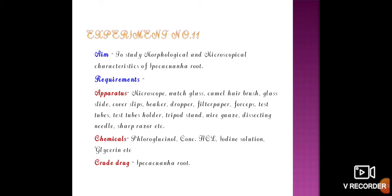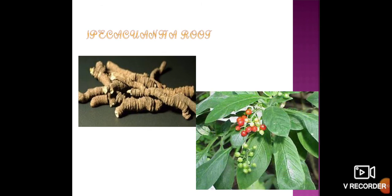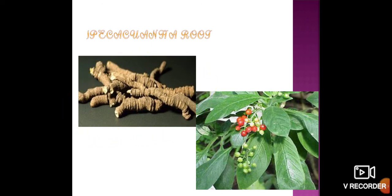The chemicals required are fluoroglycinol, concentrated hydrochloric acid, iodine solution, and glycerin, along with the crude ipecacuanha drug. This is the image of the ipecacuanha root and the plant. These ipecacuanha roots are used as a drug in the treatment of dysentery.